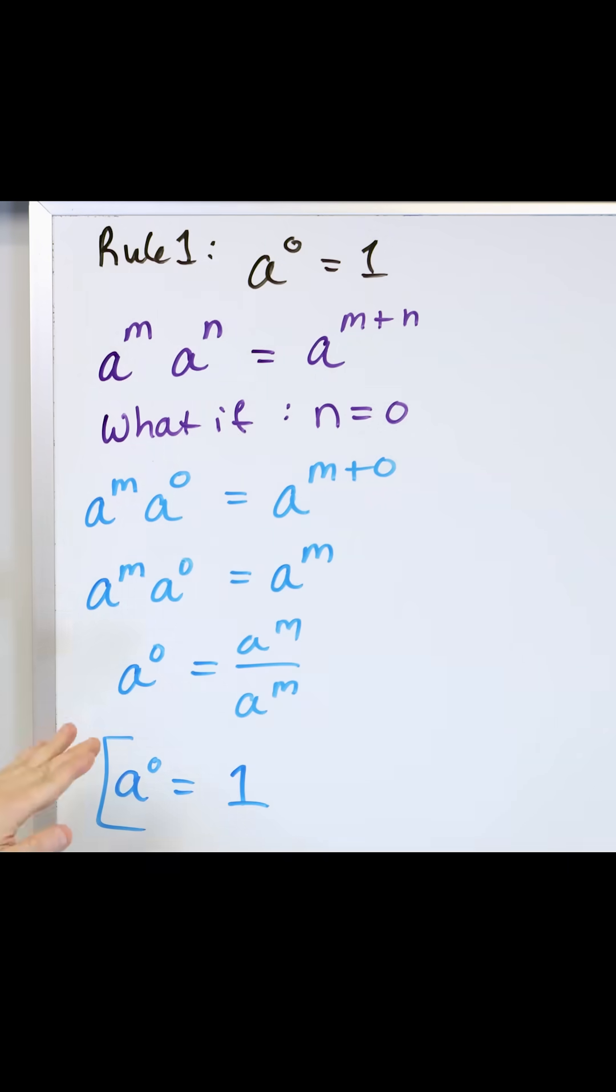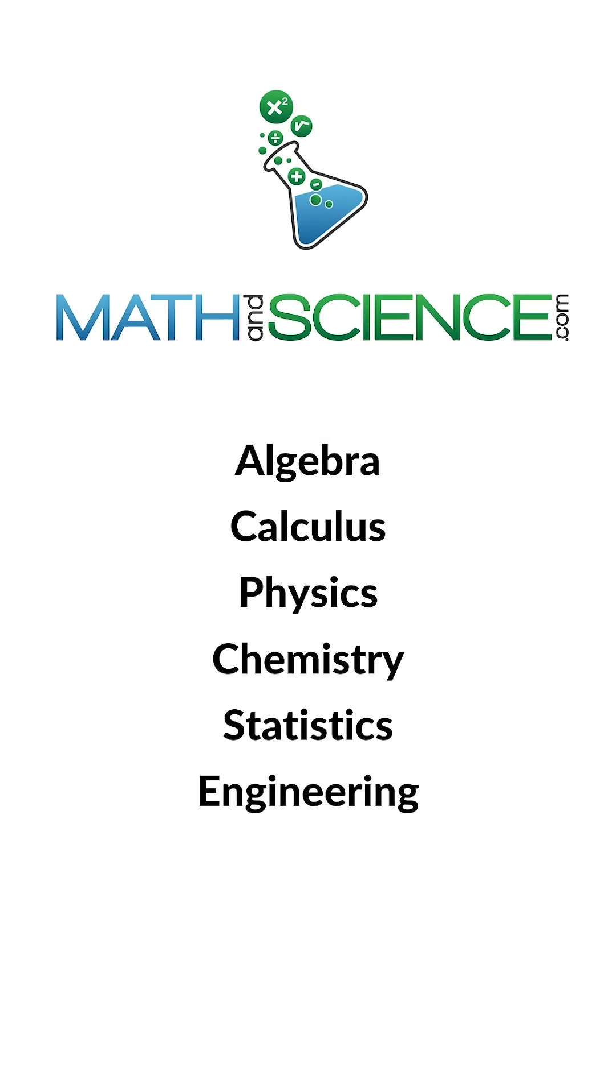So because we can't do that, we exclude the possibility when a is actually zero, and so we say zero raised to the zero is not defined. Learn anything at mathandscience.com.